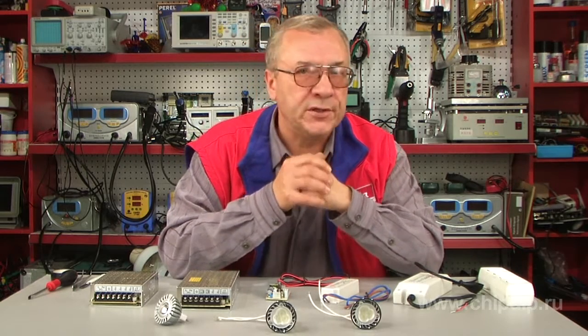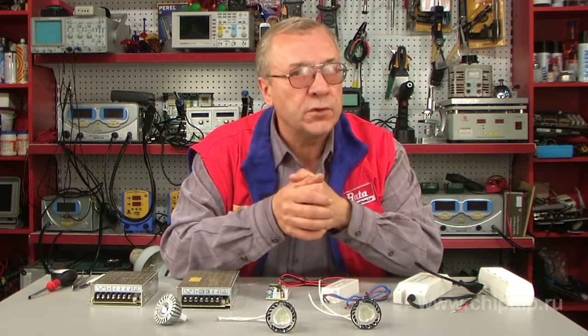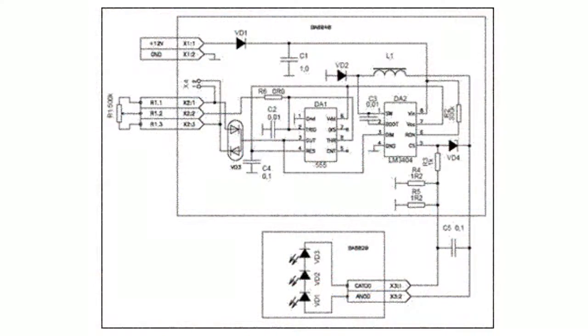If the input voltage has an operating range from 150 to 250 volts and the output voltage is constant, such as 12 volts, such a supply is called a DC voltage power supply. When the input and output voltages vary within a certain range and the output current is constant, for example 300 mA, the supply is a DC current power supply.